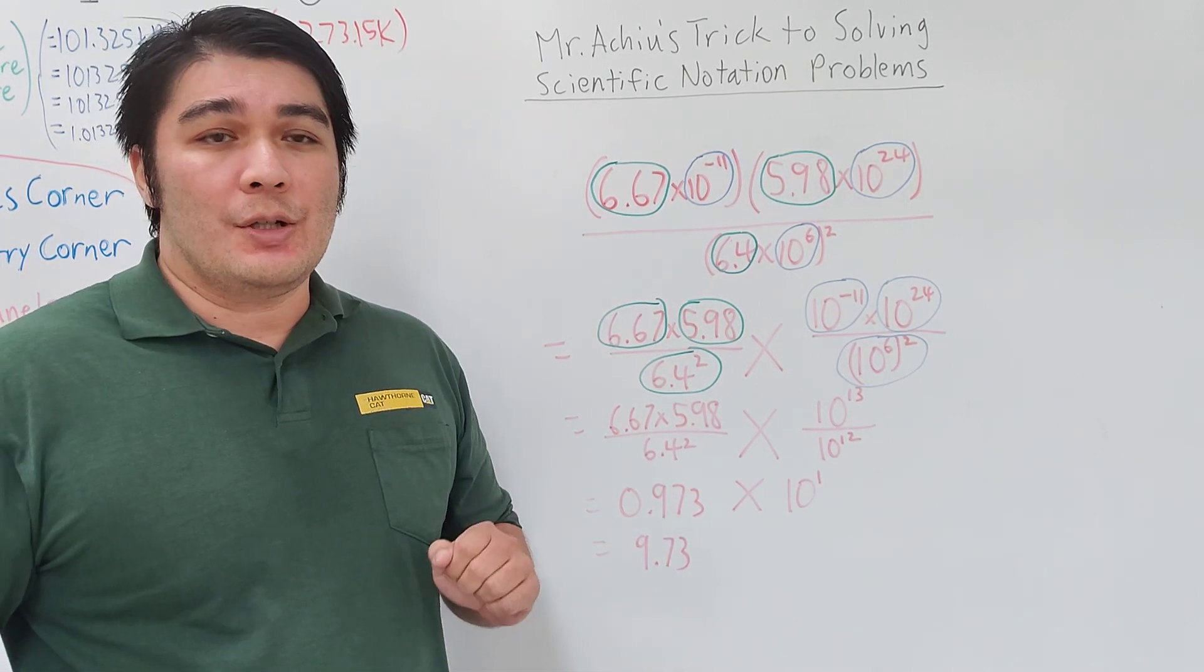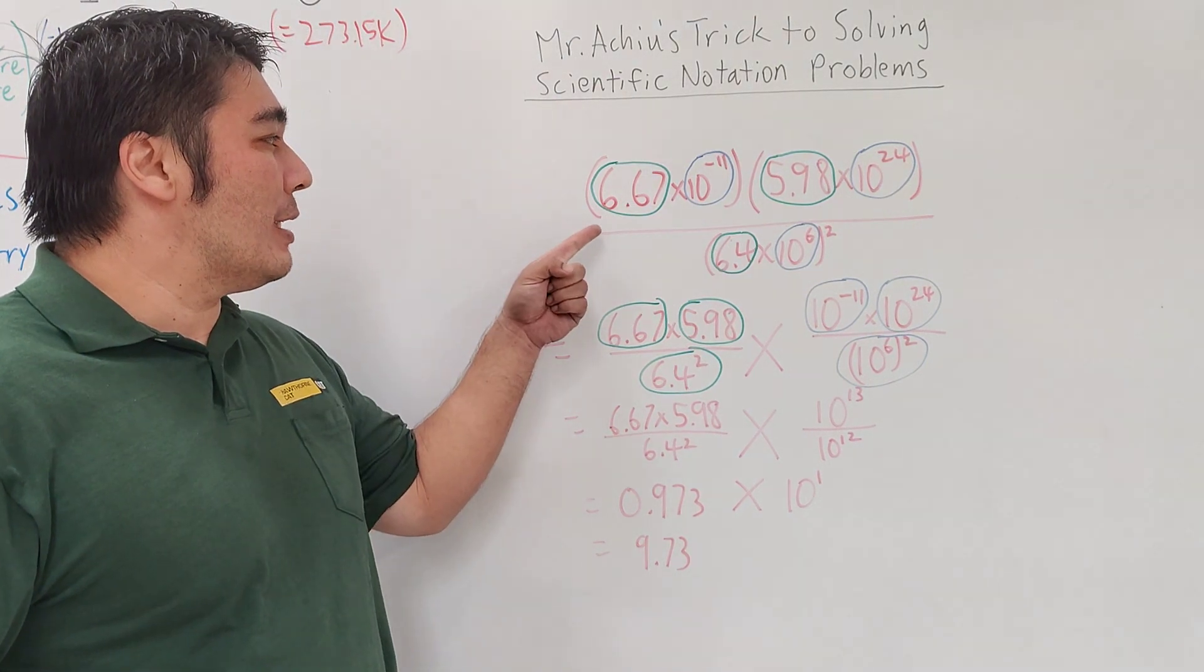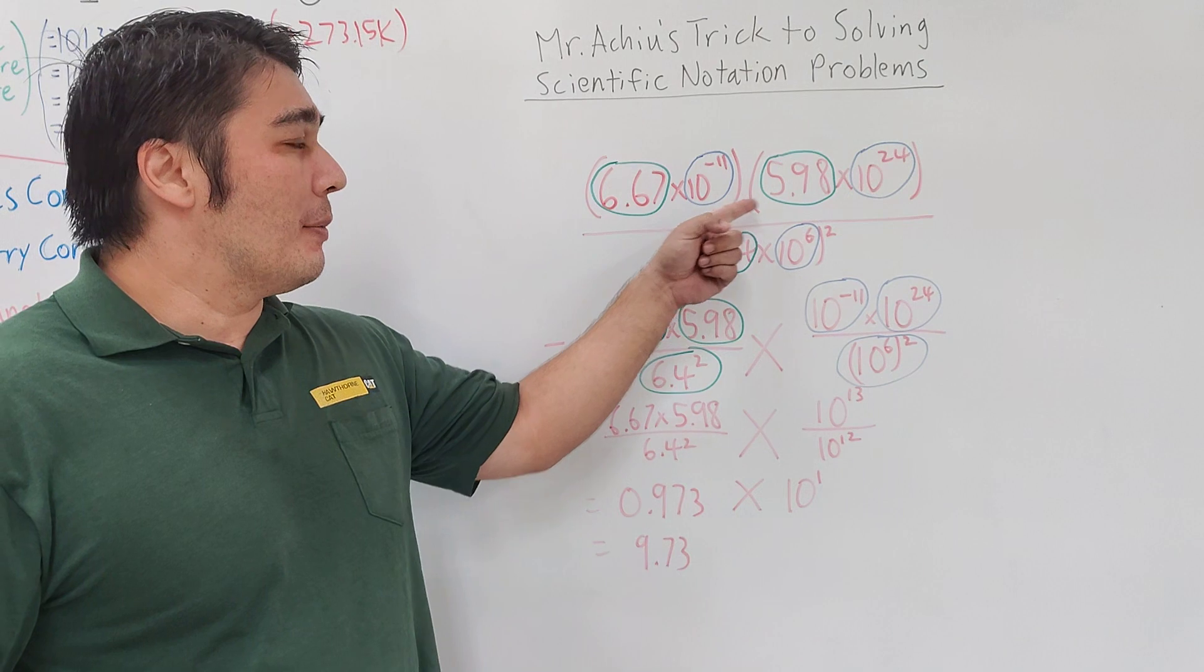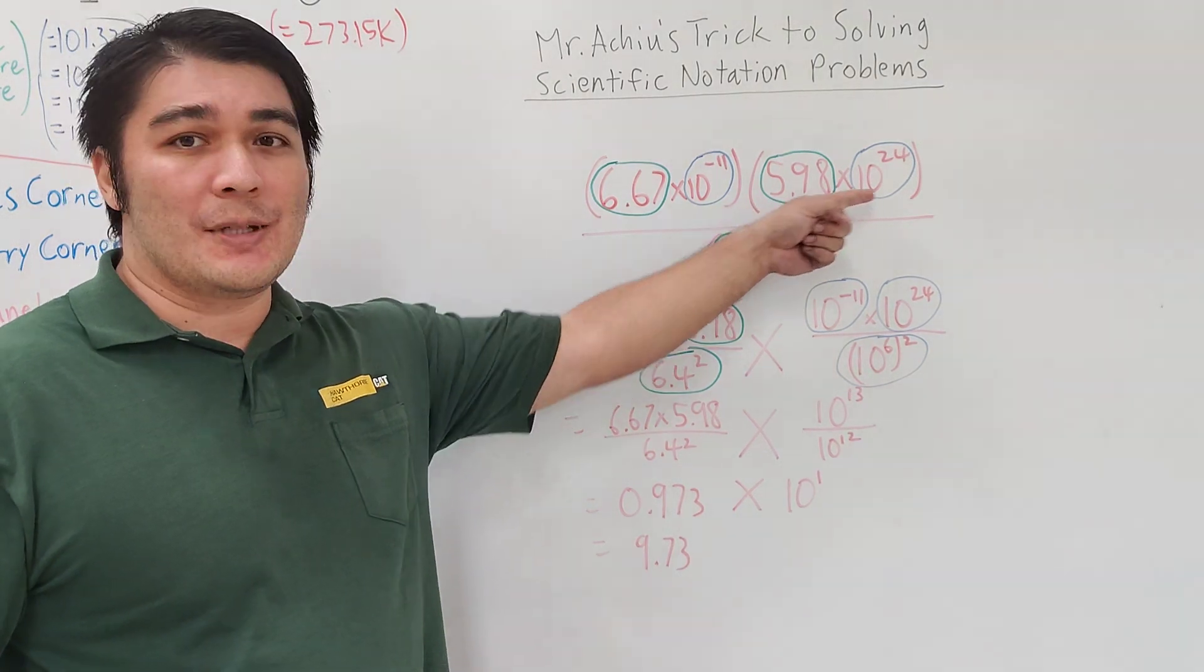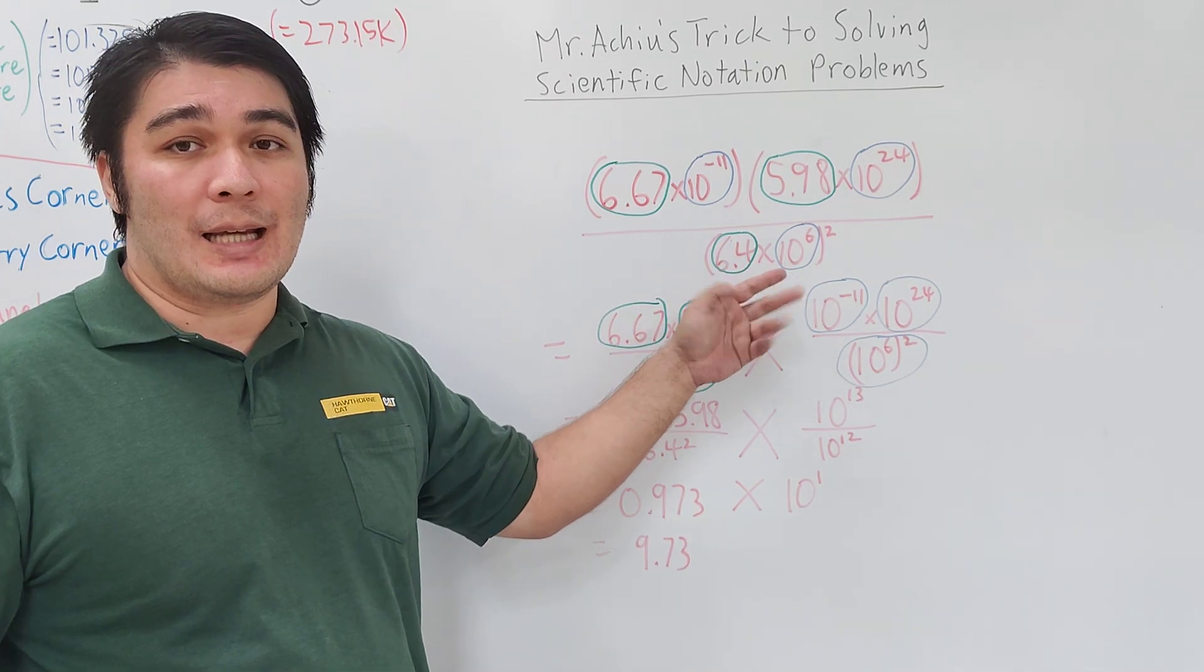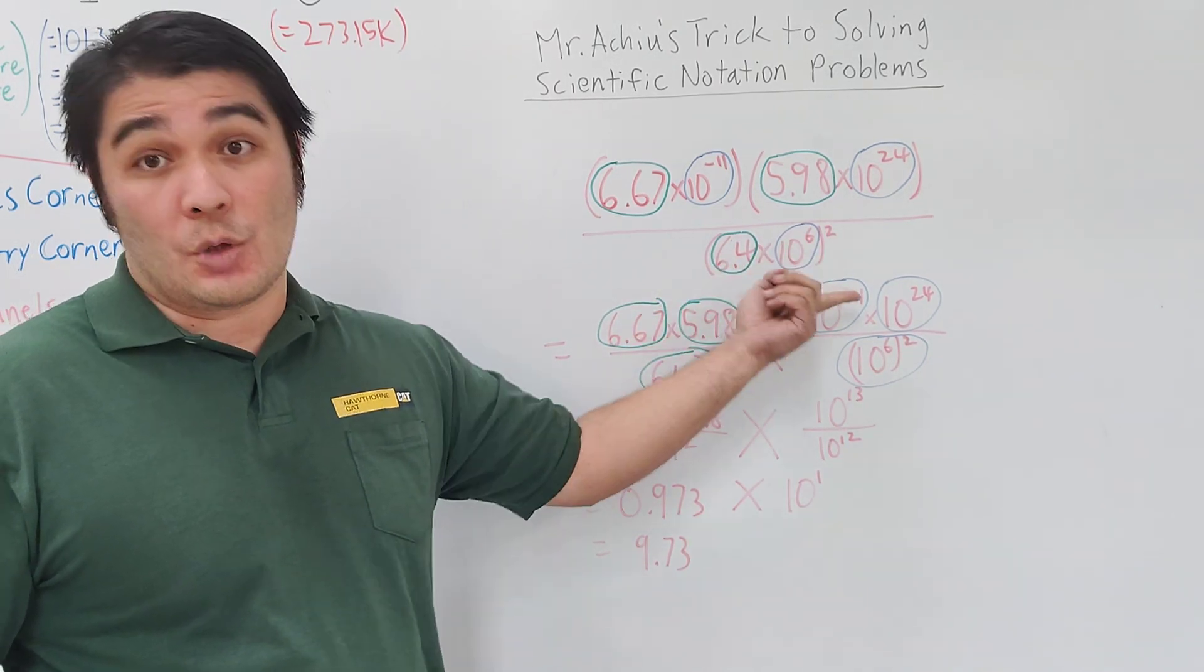Let us begin. The problem is: 6.67 times 10 to the negative 11th, multiplied by 5.98 times 10 to the 24th, divided by 6.4 times 10 to the 6th, and all of that is squared.